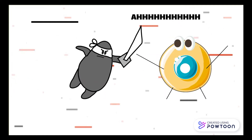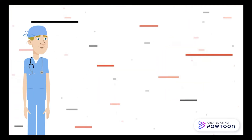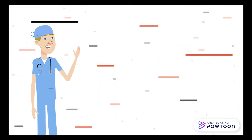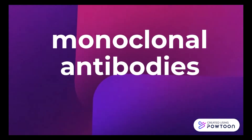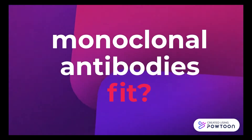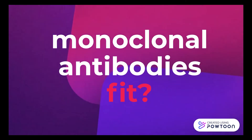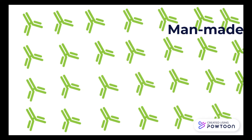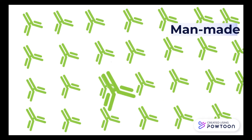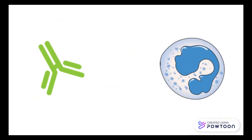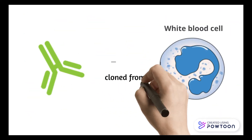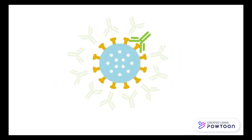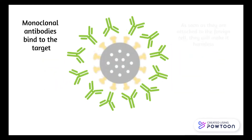You heard it right — it's called autoimmune disease. How do monoclonal antibodies fit the picture? Well, monoclonal antibodies are man-made antibodies cloned from a distinct white blood cell, and they function just like any normal antibodies in our immune system.